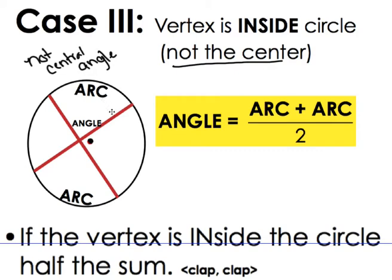So we have to have another little way to figure it. So what you do is if the angle is inside the circle, that's part of the song. If the vertex is inside the circle, half the sum.